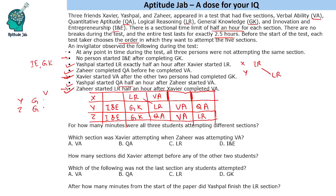VA will come in the remaining slot for Yashpal, and we still need to fill Xavier's slots. Xavier is left with I&E, GK, and QA for his remaining positions. Since all three persons were not attempting the same section at any time, Xavier cannot attempt I&E in the same slot as the others. So Xavier must be attempting I&E and GK in those slots, and the remaining slot is QA — meaning Xavier started the paper with QA. This completes the table of the five sections for all three people.